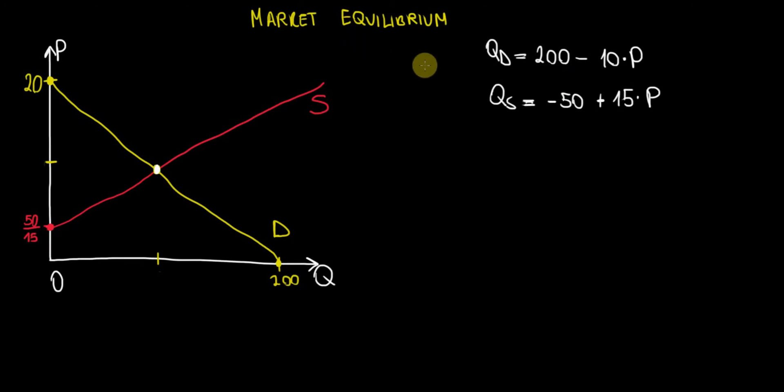What does equilibrium mean? That means an agreement between the demand and the supply between the consumers and the producers. So in other words we have to make these functions equal to each other and that's exactly what we're going to do.